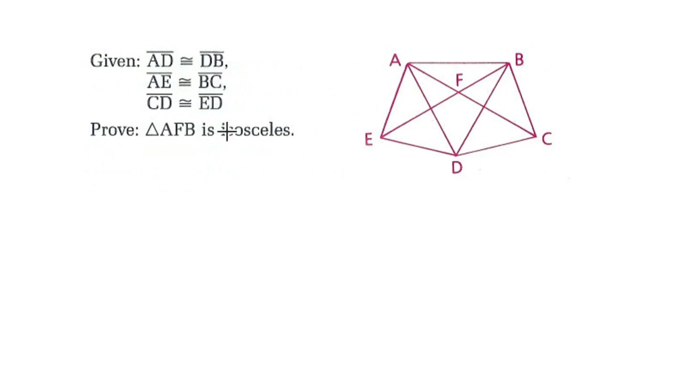Hello, welcome. In this video, we are going to prove that triangle AFB is isosceles. And you can see our diagram right here. So maybe the first thing you want to do is pause the video and try to just think about it informally. Like with these givens that AD is congruent to DB and so on and so forth, how might you go about proving that AFB is isosceles?